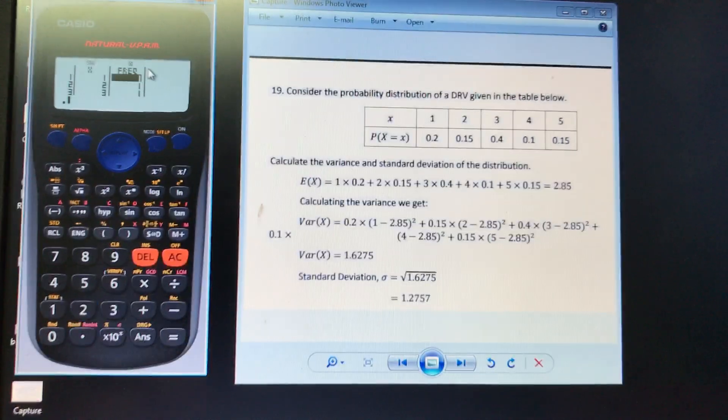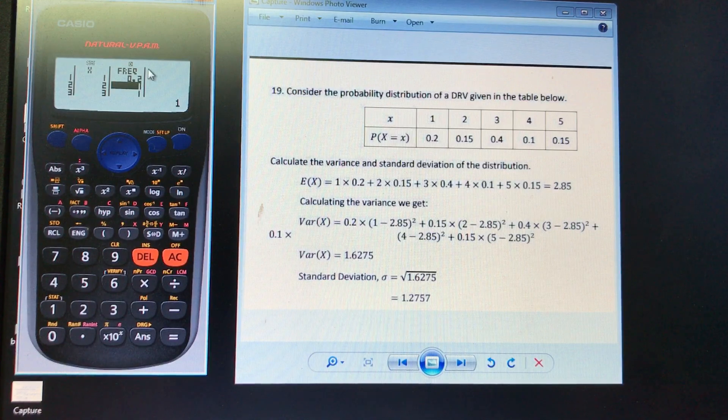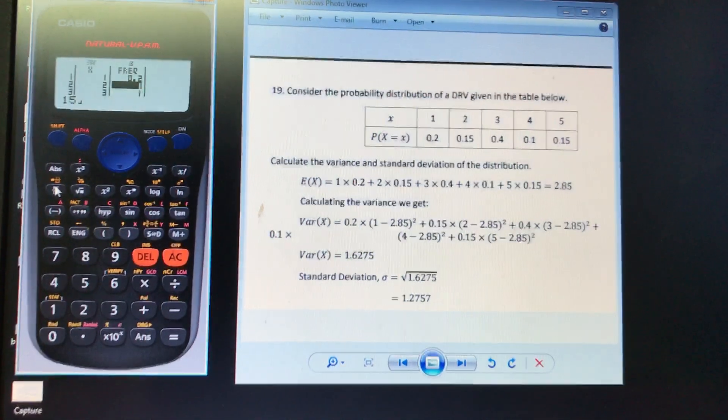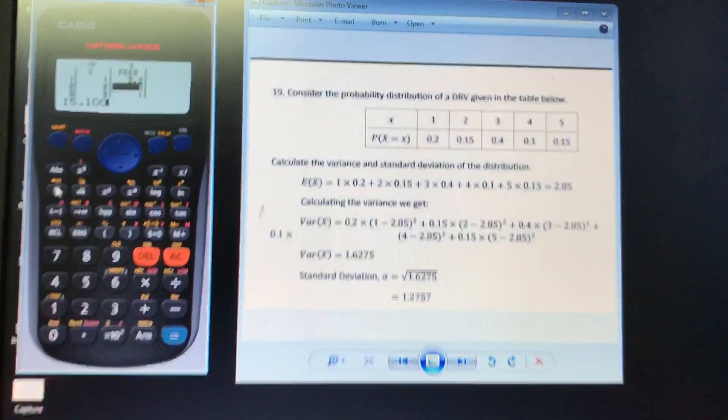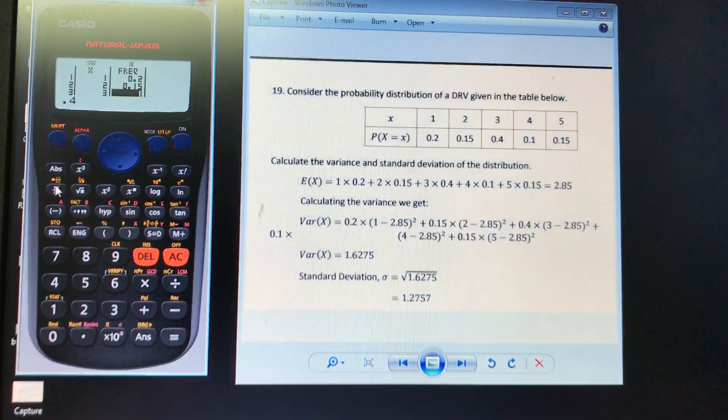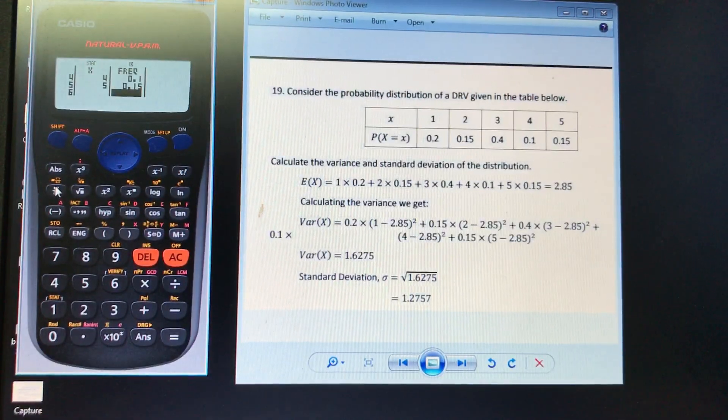So our probability is 0.2. I can type it as a fraction if I wanted to. So 15 over 100 and it converts it to a decimal for me anyway. 0.4, 0.1, 0.15. Put all our data in.